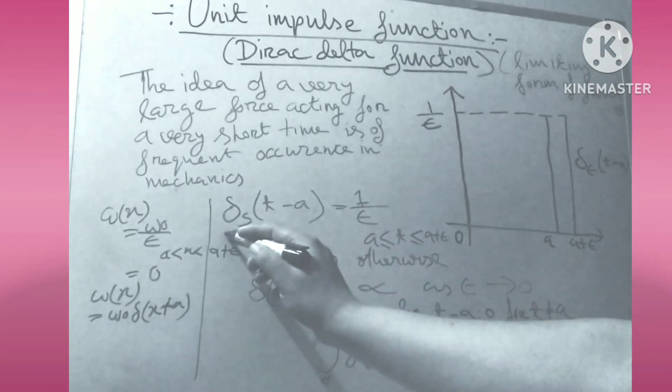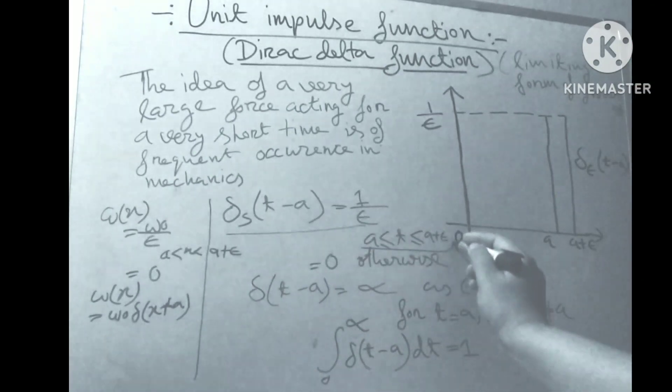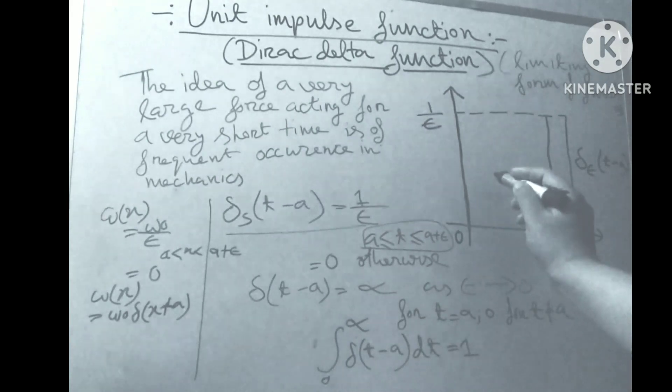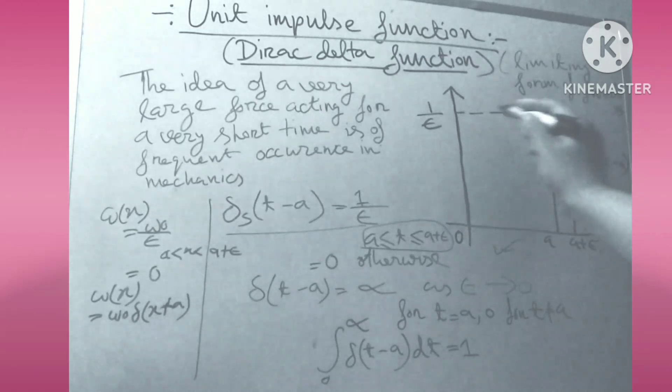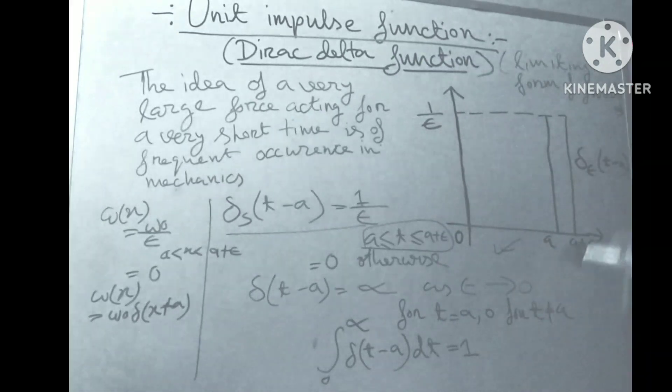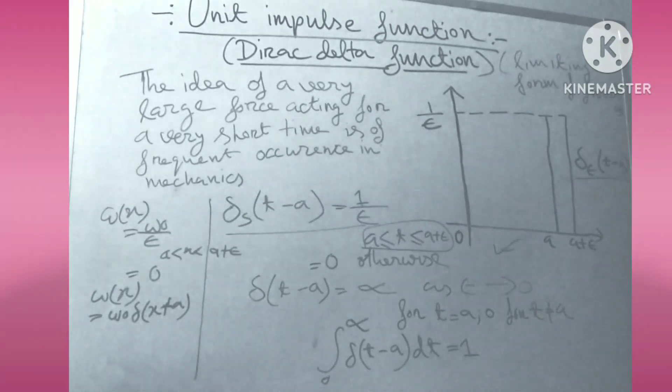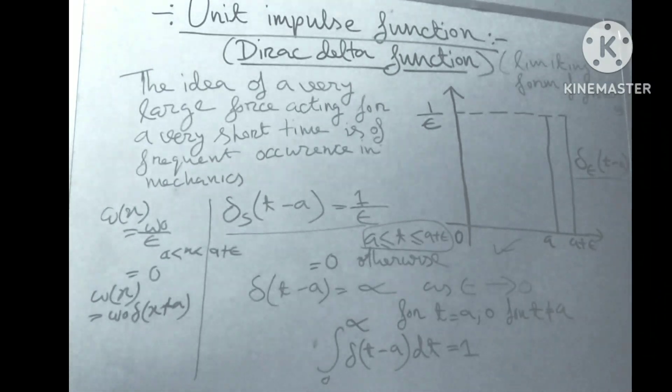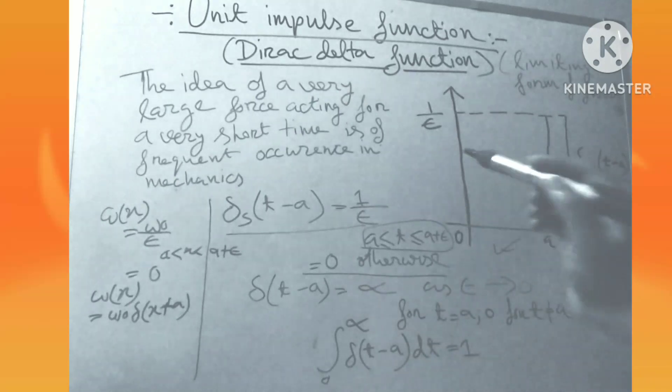Del is t minus a equals to epsilon, where a less than or equals to a plus epsilon. Let's check this diagram, this figure. This is a, this is epsilon. A is triple epsilon and this is 1 by epsilon. This is del epsilon t minus a. Del epsilon t minus a function equals 1 by epsilon and otherwise zero everywhere.